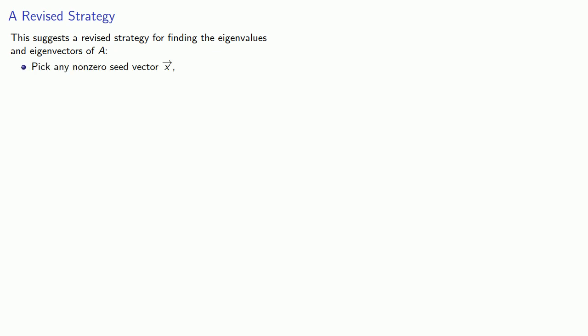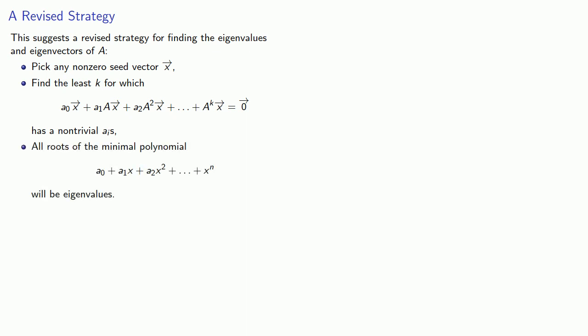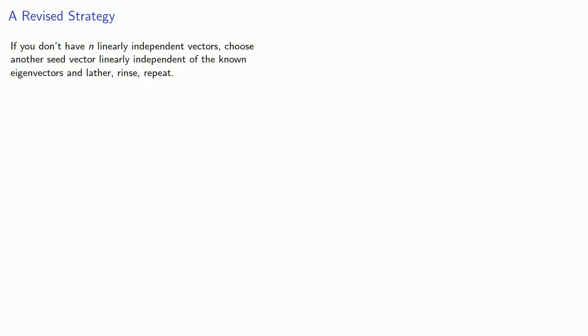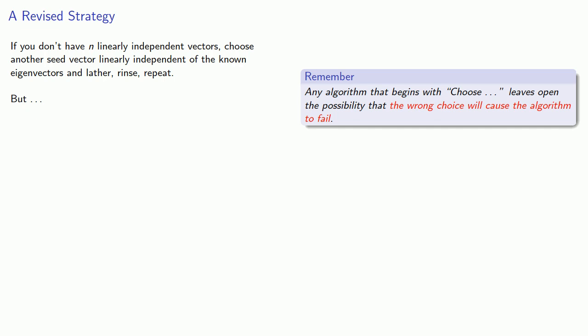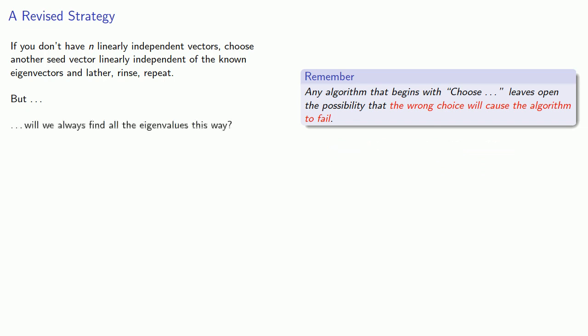This suggests a revised strategy for finding the eigenvalues and eigenvectors of some matrix A. First, pick any non-zero seed vector and find the least k for which it has nontrivial coefficients — all roots of the minimal polynomial will be eigenvalues. Find all corresponding eigenvalues and generalized eigenvectors. If you don't have n linearly independent vectors, choose another seed vector linearly independent of the known eigenvectors and repeat. Any algorithm that begins with 'choose' leaves open the possibility that the wrong choice will cause the algorithm to fail, so the important question is: will we always find all the eigenvalues this way? We'll take a look at that next.